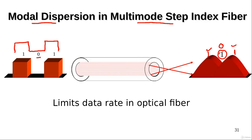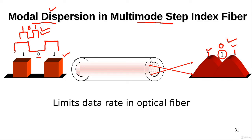As we increase the data rate, these pulses become closer to one another. For a higher data rate, the pulses and the zero durations are much shorter. In this case, the possibility of making wrong decisions at the receiver increases. So in the case of multimode step index fiber, modal dispersion limits the maximum data rate that can be sent through the optical fiber, because if we go beyond that data rate we would have excessive bit errors at the receiver.